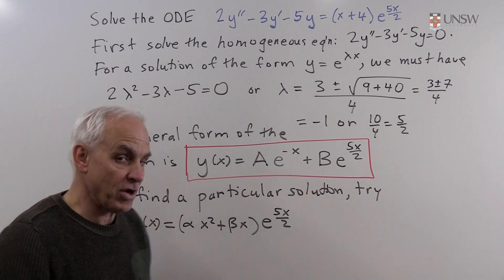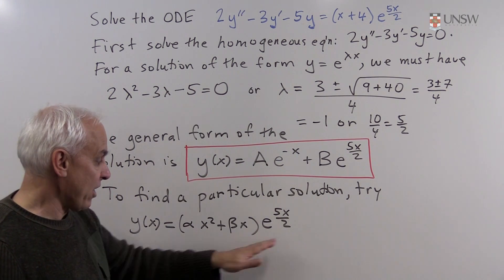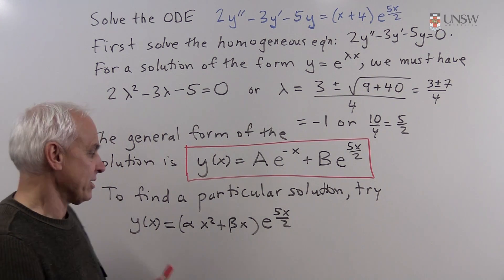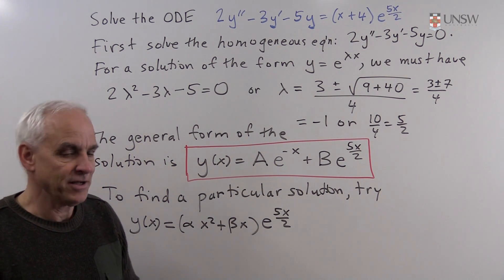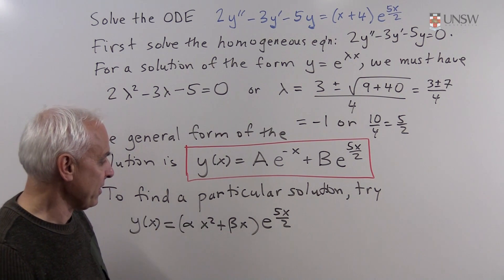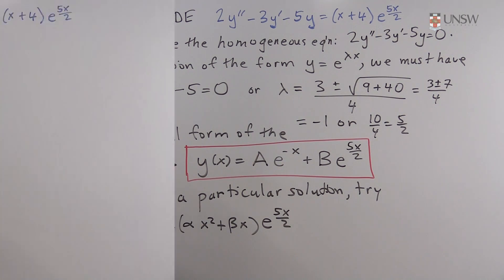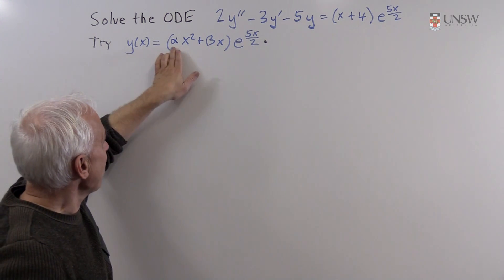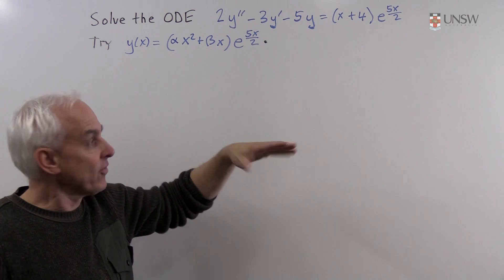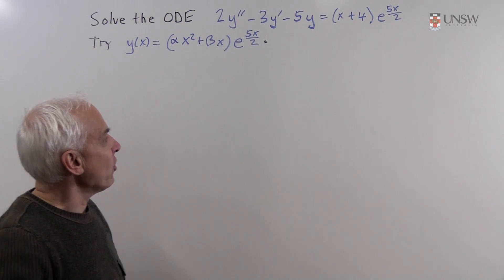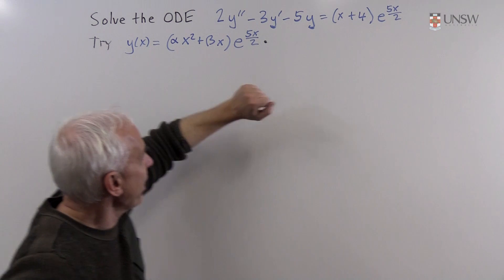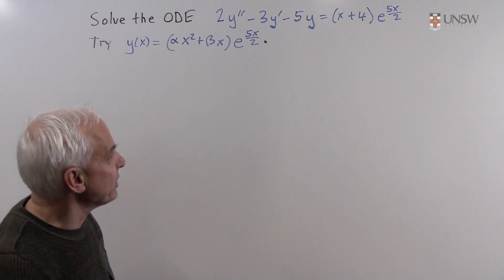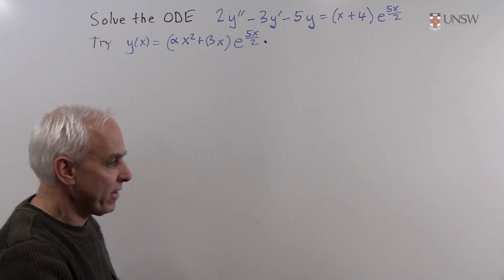On some exam questions you might just be asked to write down this general guess for a particular solution. But let's go further and find the actual values of α and β. Our trial particular solution is y(x) = (αx² + βx)·e^(5x/2), where α and β are unknowns. We use quadratic and linear terms — instead of constant and linear — because e^(5x/2) was a solution to the homogeneous equation, so we bump up the coefficients.